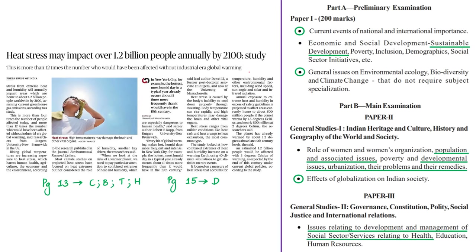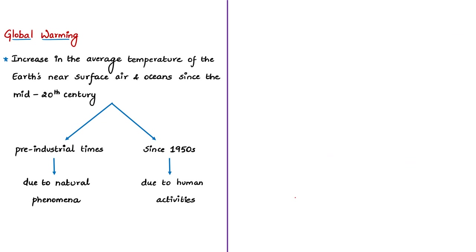The next news article talks about an estimation of the number of people affected by heat stress due to increasing global warming. A group of researchers from the US analyzed how combined extremes of heat and humidity due to global warming affect humans. Global warming refers to the increase in the average temperature of the Earth's near-surface air and ocean since the mid-20th century. During pre-industrial times till 1950, warming was mainly due to natural phenomena like solar radiation and volcanoes.